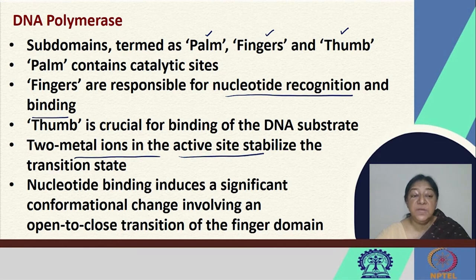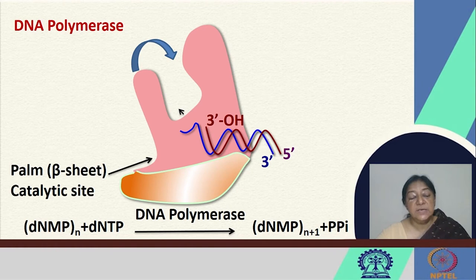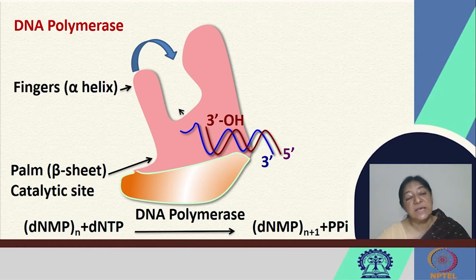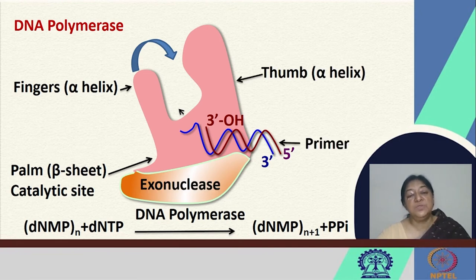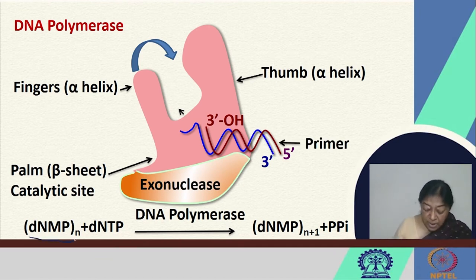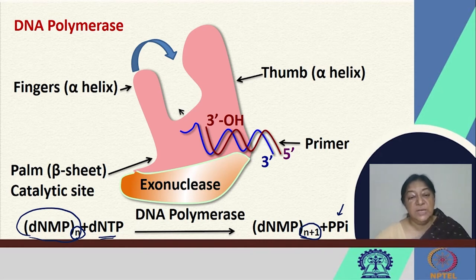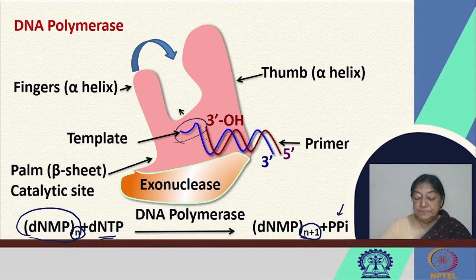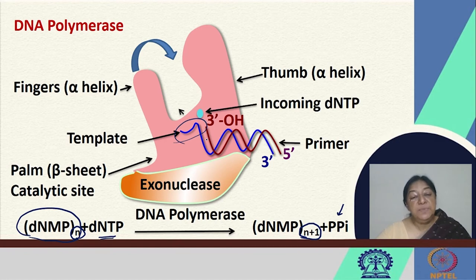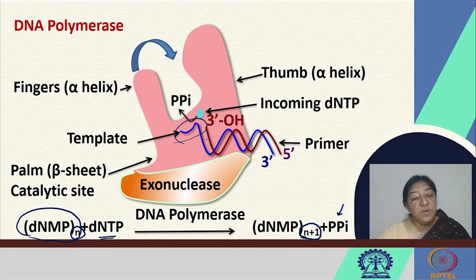Nucleotide binding induces a significant conformational change involving an open-to-closed transition of the finger domain. The palm is the beta sheet that forms the catalytic site; the fingers are associated with an alpha-helical conformation, as is the thumb. The exonuclease domain is also present. DNA polymerase works by extending from N nucleotides to N+1, releasing pyrophosphate (PPi) in the process.